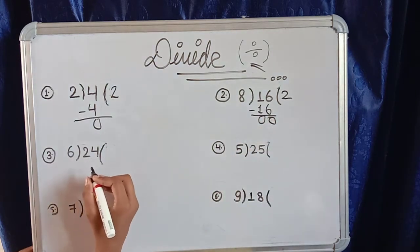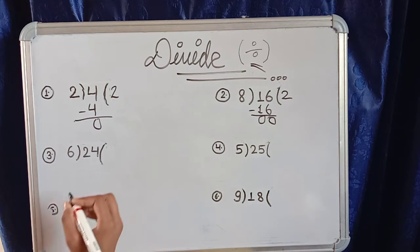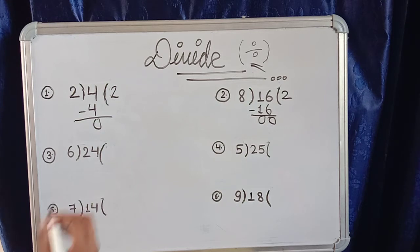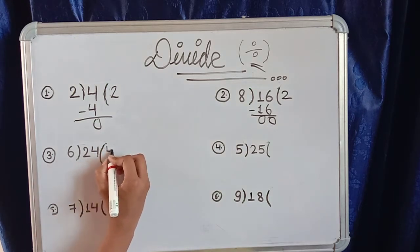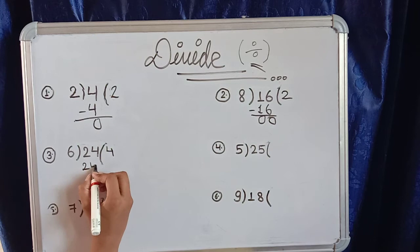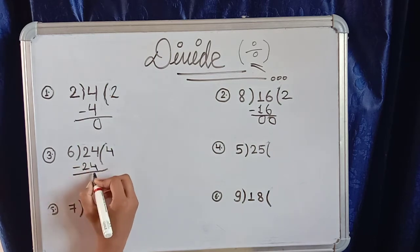Question number three is 6 divided by 24. We read the 6 times table: 6 ones are 6, 6 twos are 12, 6 threes are 18, 6 fours are 24. So the answer is 4. Here we write 4, and here we write 24.